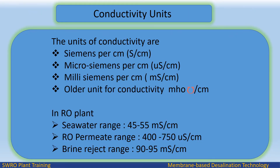Conductivity units: the units of conductivity are Siemens per centimeter, microsiemens per centimeter, and millisiemens per centimeter. The older unit is mho per centimeter. In an RO plant: seawater range is 45 to 55 millisiemens per centimeter; RO permeate range is 400 to 750 microsiemens per centimeter; brine reject range is 90 to 95 millisiemens per centimeter.